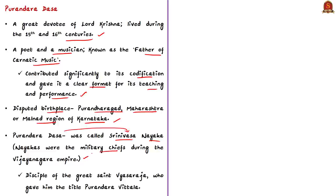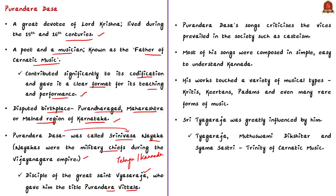According to some sources, Purandharadasa was born to a rich merchant and was called Srinivasanayaka. Note that Nayakas were military chiefs during the Vijayanagara Empire who controlled forts, had armed supporters, and usually spoke Telugu or Kannada. Srinivasanayaka later became a disciple of the great saint Vyasa Raja, who gave him the title Purandharavitala. Purandharadasa's songs express his love for Lord Krishna and criticize practices like casteism. Most of his songs were composed in simple Kannada. He identified 84 ragas, and his works touched musical types like Kritis, Keertanas, Padams, and rare forms of music. Sri Tyagaraja was greatly influenced by him.